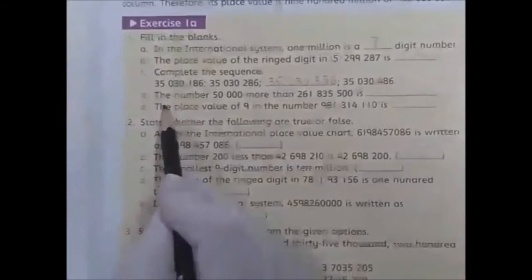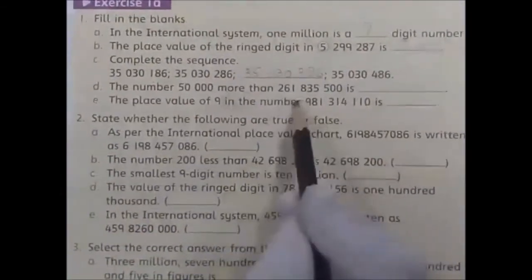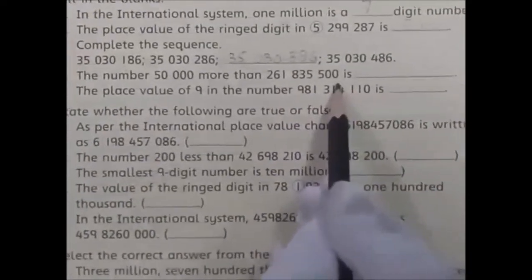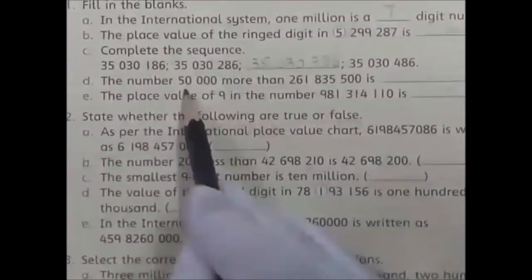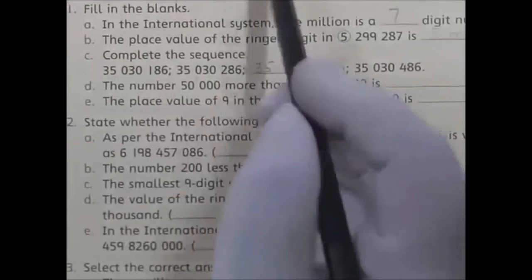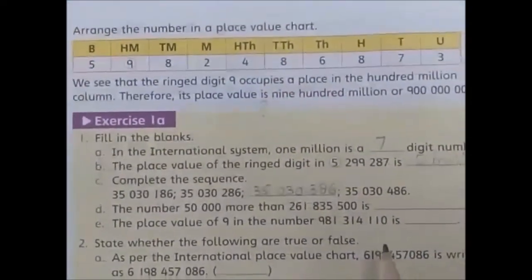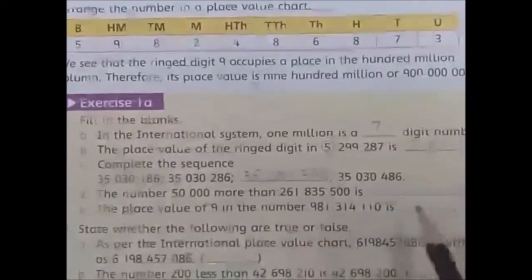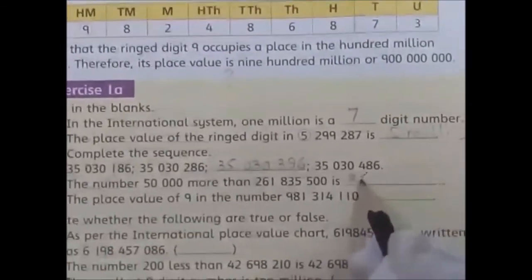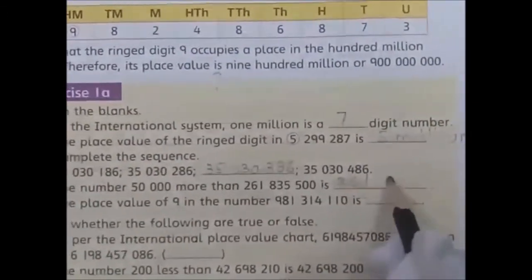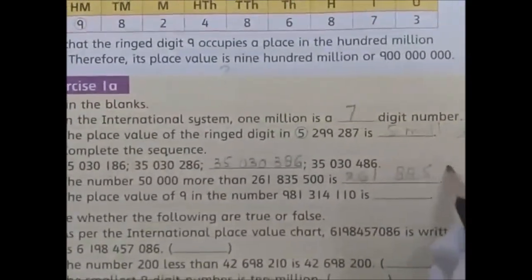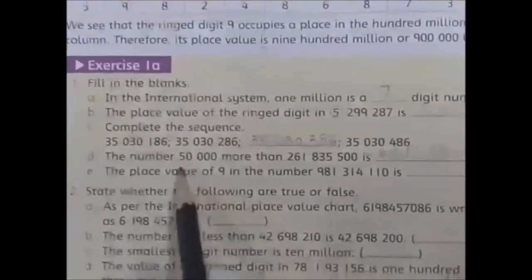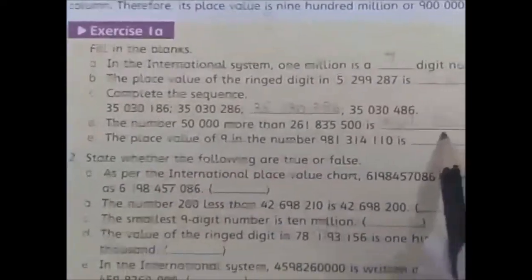Part D: the number 50,000 more than 261,835,500. It is addition of 50,000. If we add 50,000 to this number, we get 261,885,500. Three plus five becomes 8.